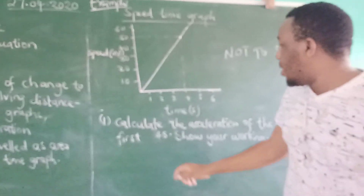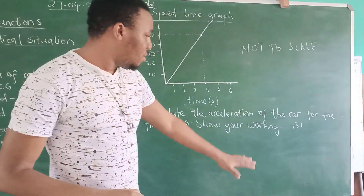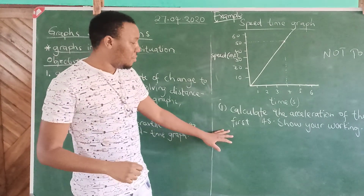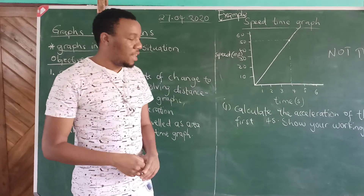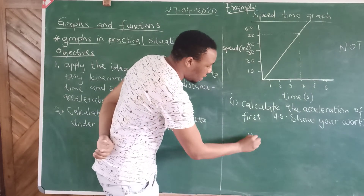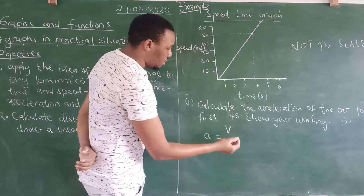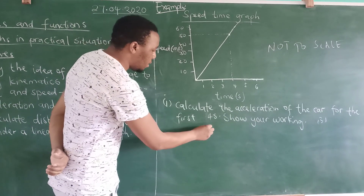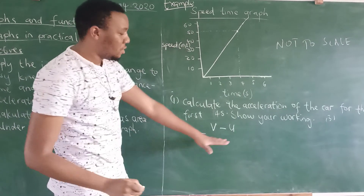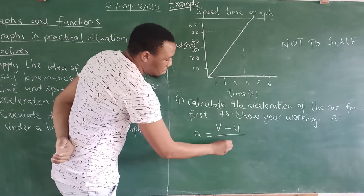Calculate the acceleration of the curve for the first four seconds. Since you are required to show your working, you are also required to show your formulas. Based on physics knowledge, the formula for acceleration is: acceleration equals final velocity (v) minus initial velocity (u), divided by time.